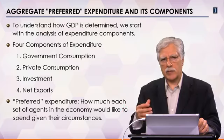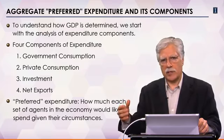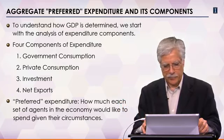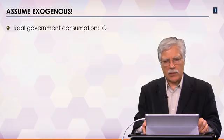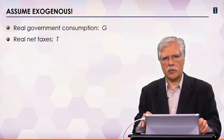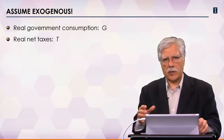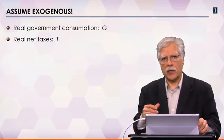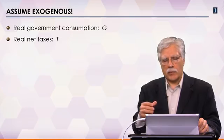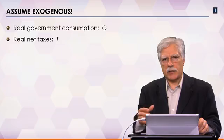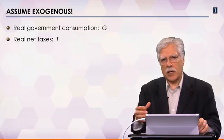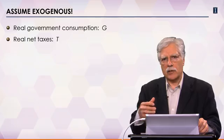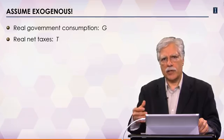Those circumstances themselves may depend on expenditure, but that's something we will discuss later on. Let's start with two variables: government expenditure and taxes. I'm going to assume they're exogenous — they're given. This may look unrealistic because taxes especially should depend on income, but we make these assumptions to simplify the analysis. The main point is not so much to be correct at this stage; it's to develop a model, understand how it behaves, and then put in realism.